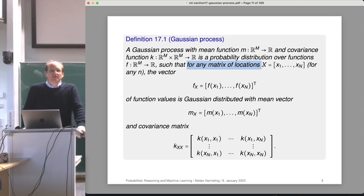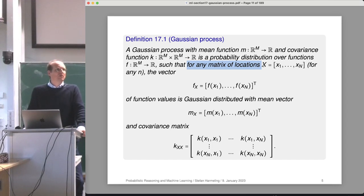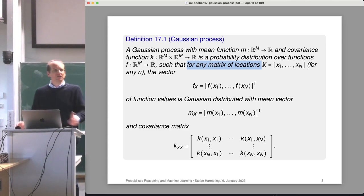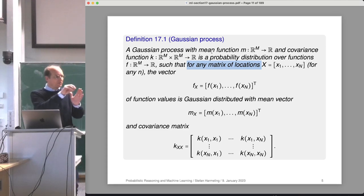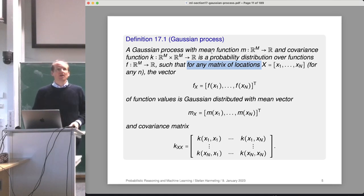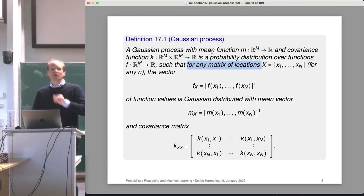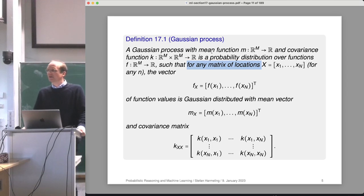This definition doesn't immediately tell us that a Gaussian process exists or that its distribution is unique. In a mathematics lecture we would spend several sessions proving uniqueness and existence. We don't do this here. We are happy with the fact that when we do calculations, we always have finitely many data points — we collapse onto Gaussian distributions and use programs that compute multivariate Gaussian distributions.